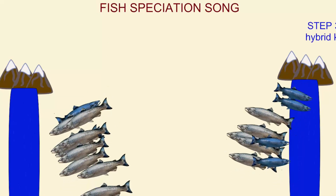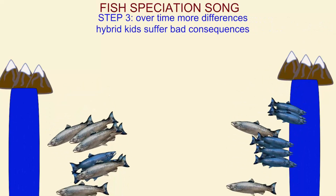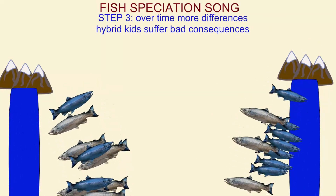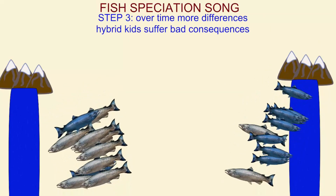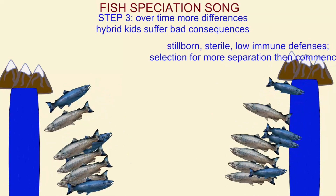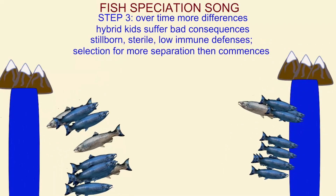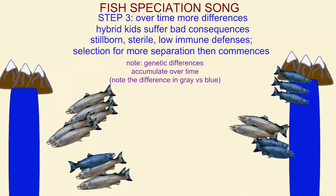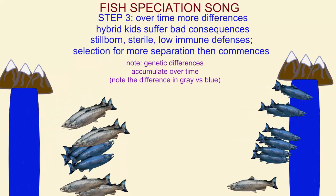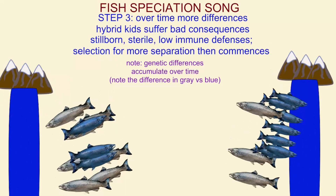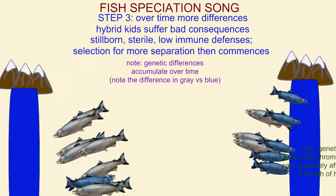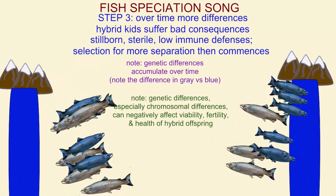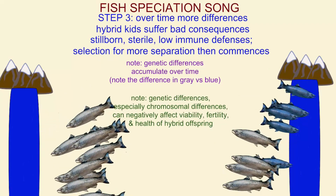Step three: over time, their differences grow; hybrid kids suffer bad consequences — stillborn, sterile, with low immune defenses — and selection for more separation then commences.